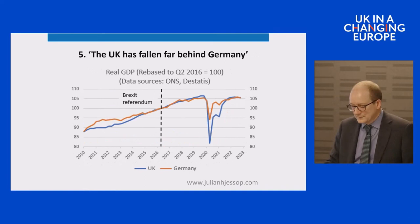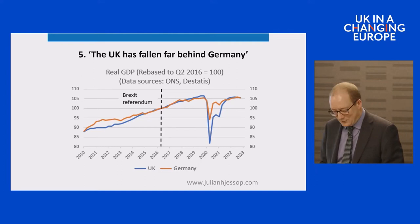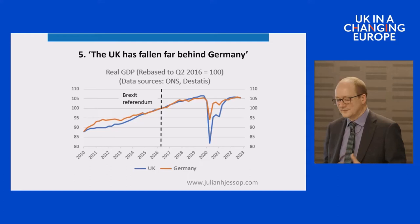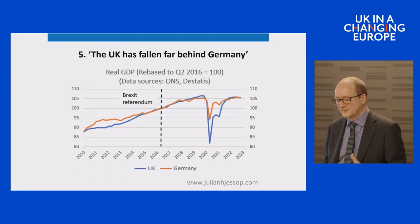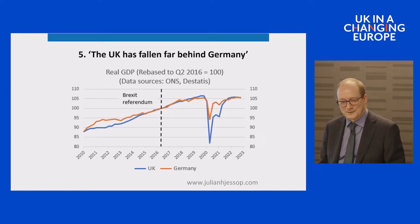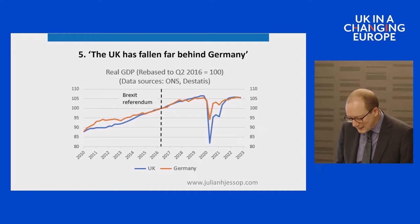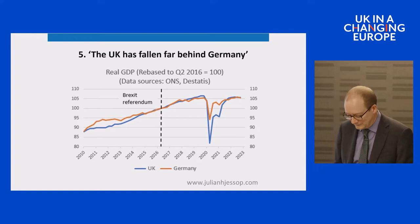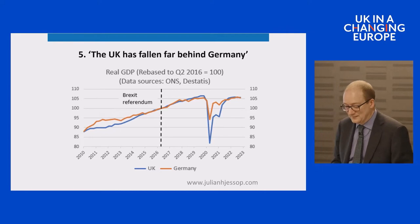The next slide compares the UK and Germany. Mark Carney produced a claim that the UK had shrunk from more than 90% of the size of Germany's economy to 70% — what we economists would call a bit naughty, because he was using market exchange rates rather than purchasing power exchange rates. If instead you simply look at what's happened to the level of real GDP in the two countries over the last decade, it's pretty similar. UK growth since 2016 has actually been marginally better than Germany's, though again not significantly different.